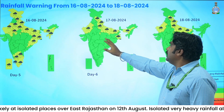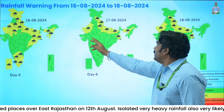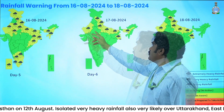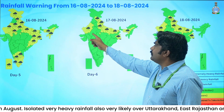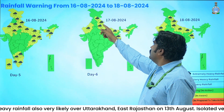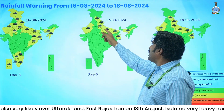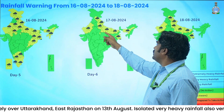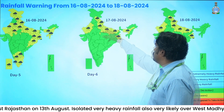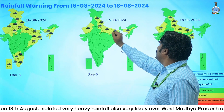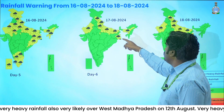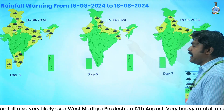Heavy rainfall warnings are shown over Rajasthan, Uttarakhand, Himachal Pradesh, Uttar Pradesh, Haryana, Chandigarh, and Delhi, also covering Assam, Meghalaya, and West Bengal.